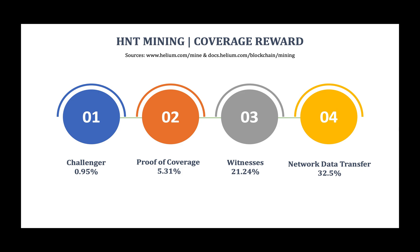The next category is Network Data Transfer: 32.5% of the total HNT is awarded here, distributed to hotspots that route LongFi data on the network. If your hotspot transmits or transfers data over the Helium network, it gets an HNT reward. IoT devices that use the network need your hotspot to transmit their data packets, and if your device is used for that, you get rewarded. There's also a Consensus Group category, but as of August first this is moving to validators — check the Helium website for more details.